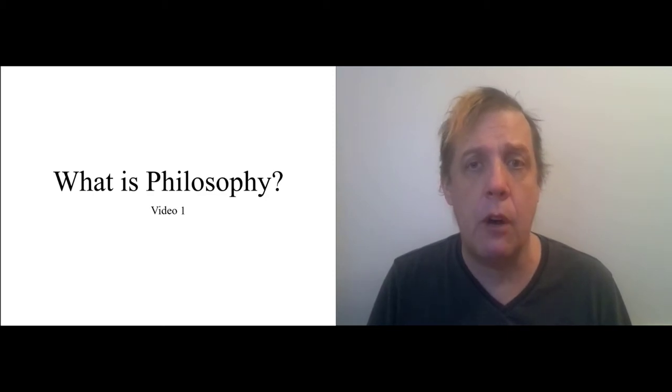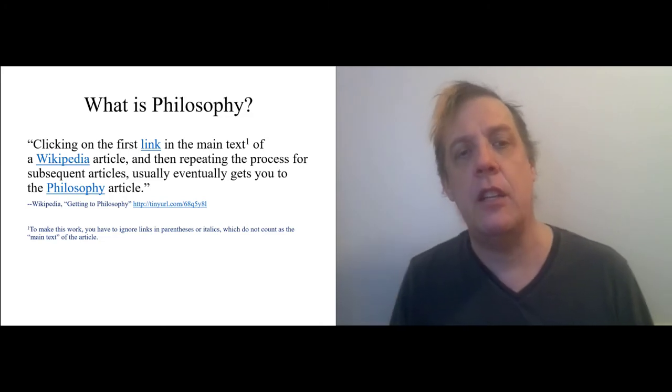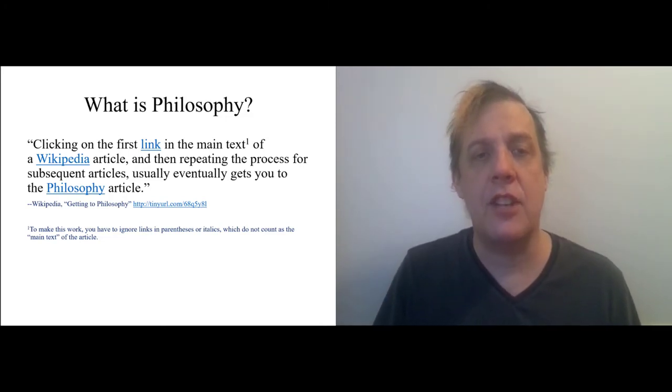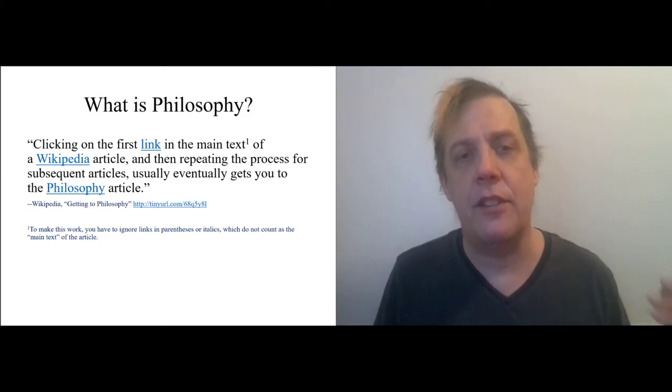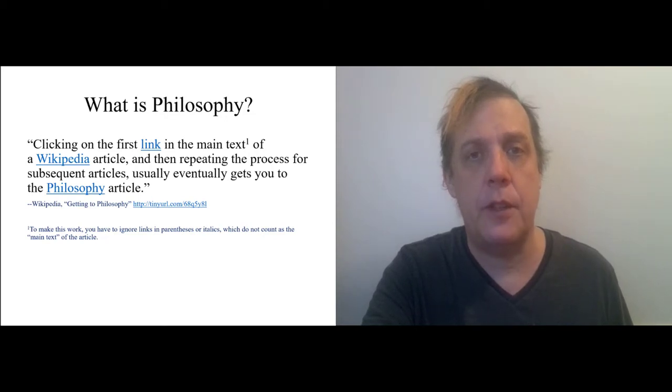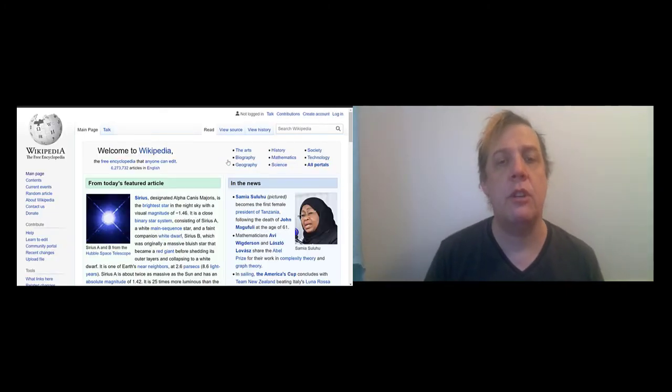So to begin with, there's this fun game from Wikipedia called 'getting to philosophy.' If you click on the first link of the main text of any Wikipedia article and then repeat that process endlessly, you pretty much always wind up at the philosophy article. For this to work, you have to ignore links in parentheses or italics which don't count as the main text. So I'm going to try this right now.